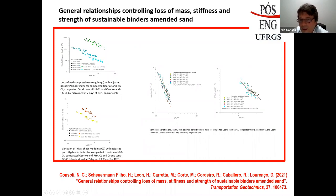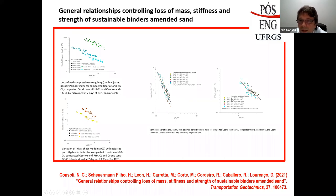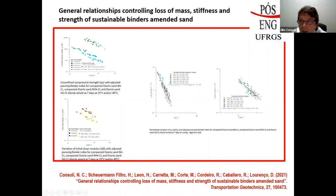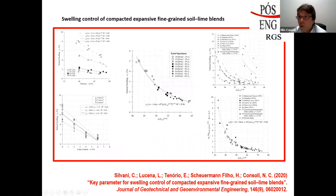A paper published this year in Transportation Geotechnics shows, for all tests with different residues and curing temperatures, that normalization yields unique curves for both unconfined compressive strength and initial shear modulus.